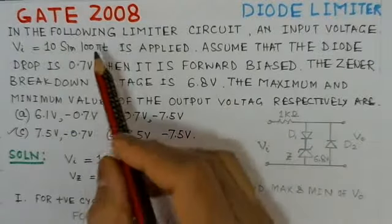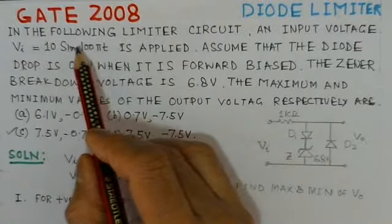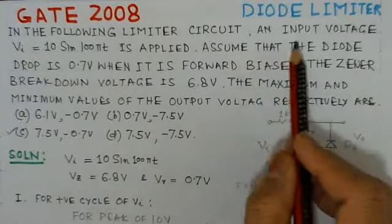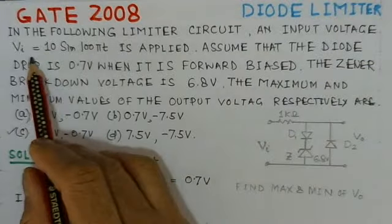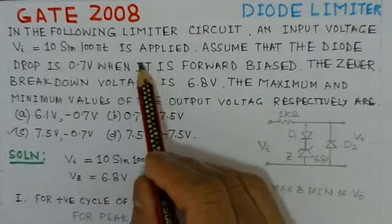We will go through the problem and see how we can give the solution. In the following limiter circuit, an input voltage VI equals 10 sin 100πt is applied.